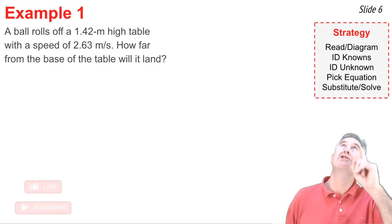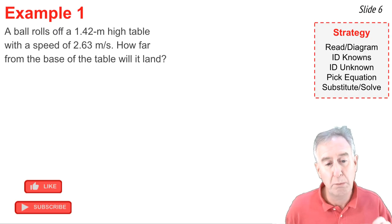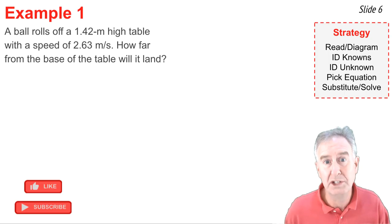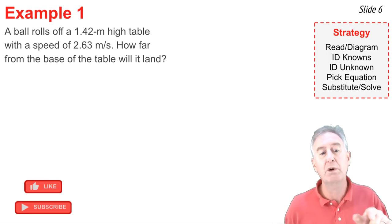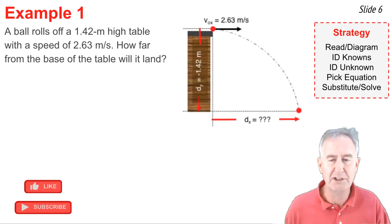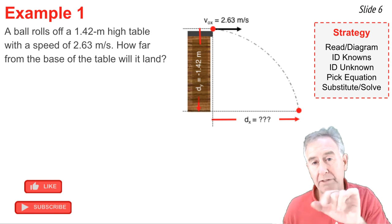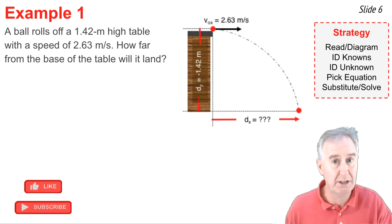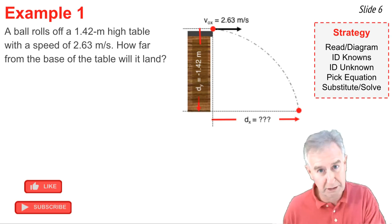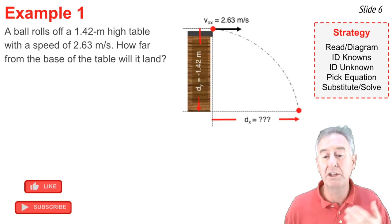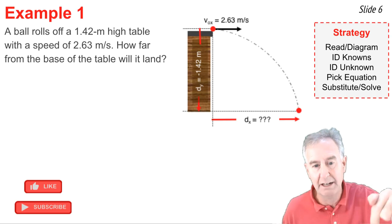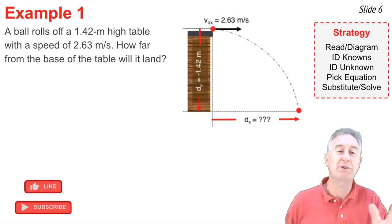Here's example one. The first step of my strategy is to read and diagram. A ball rolls off a 1.42 meter high table with a speed of 2.63 meters per second. It's rolling horizontally and it rolls off. And it says how far from the base of the table does it land. Here's my diagram. I draw a table, just a quick sketch. I put a ball at the top. It's rolled off the table. I put the original X velocity, 2.63 meters per second. And then it goes through the typical trajectory and lands on the ground. And I label DX. I'm looking for that. And I know the height of the table. So the DY is a negative or a down 1.42 meters.